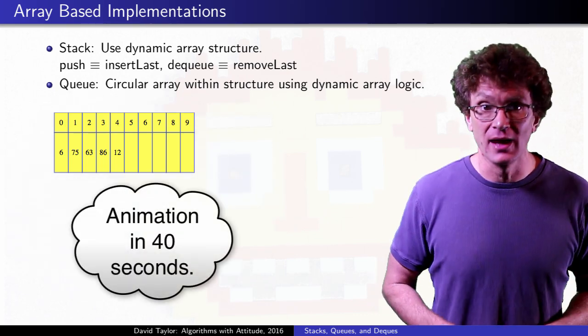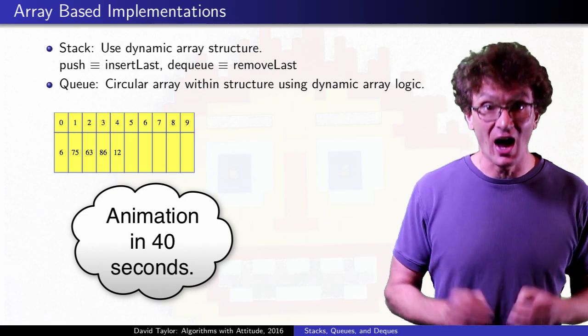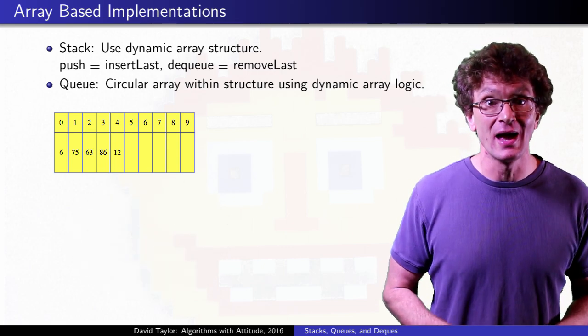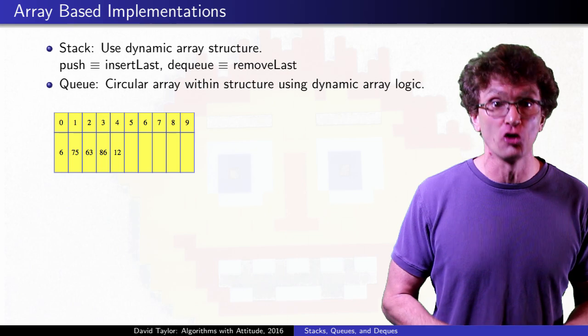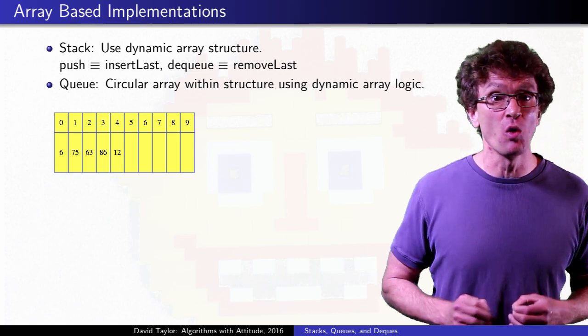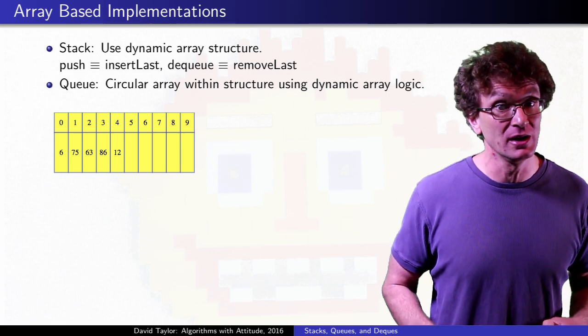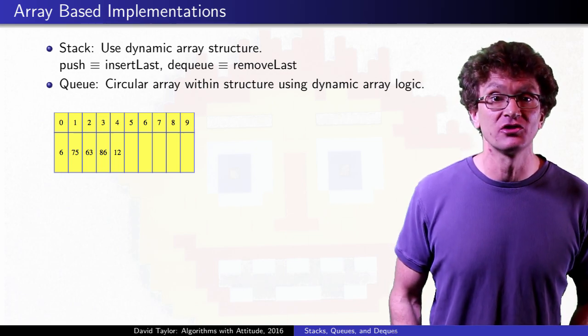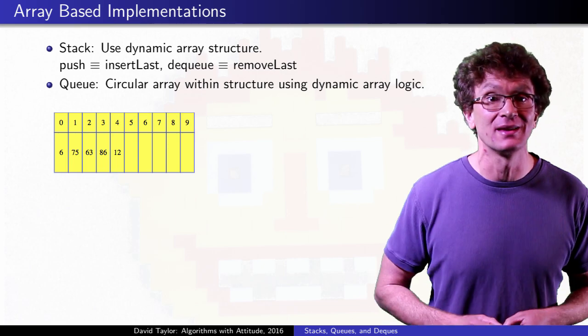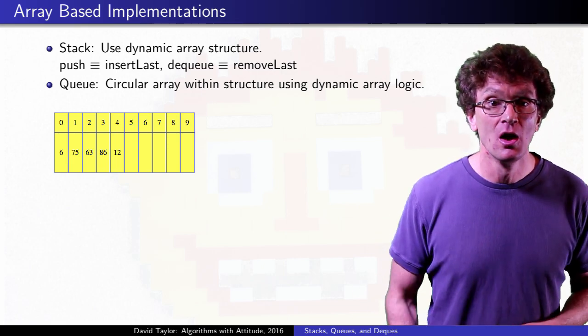Like dynamic arrays, we allocate an array with fixed capacity, keep separate track of the size of our structure within that array, and reallocate when our size grows beyond the capacity. Really, the only changes are that we won't force the first element of the array to be the first location within the array, and we will allow ourselves to wrap around when we get to the end of the array, if the first position isn't being used.